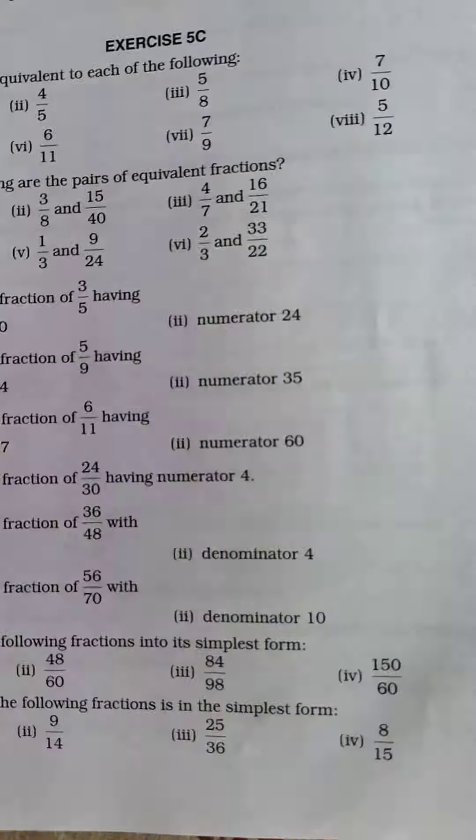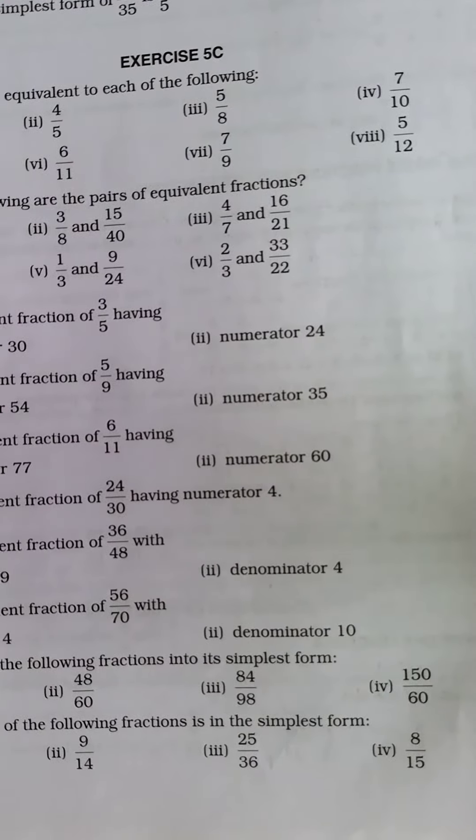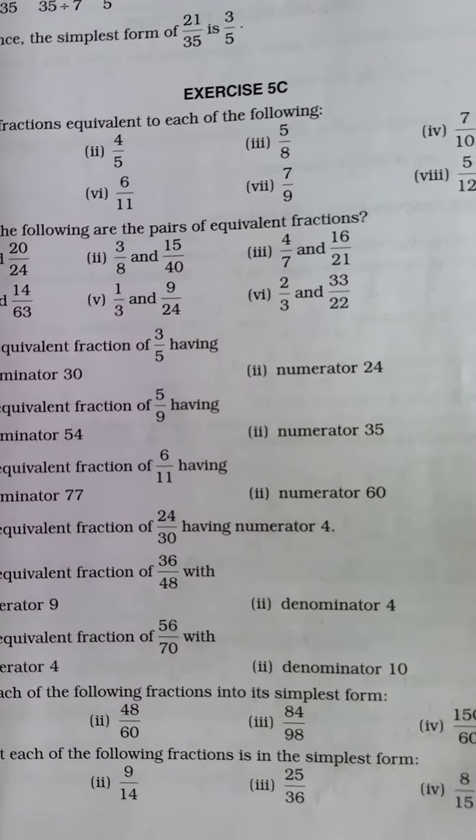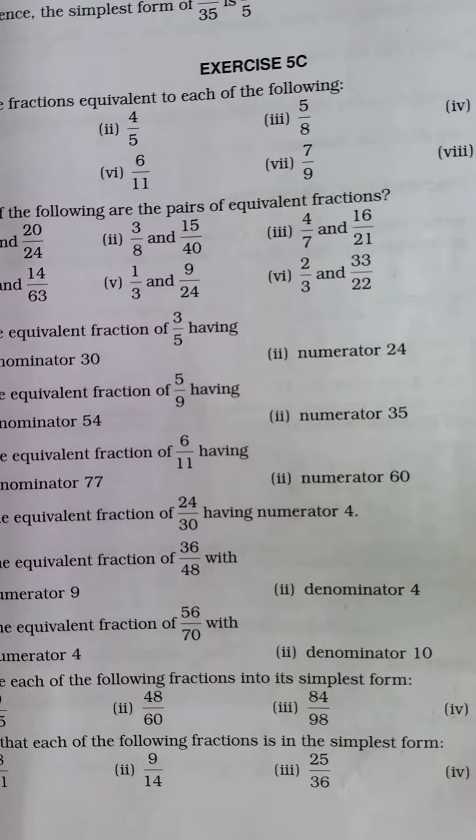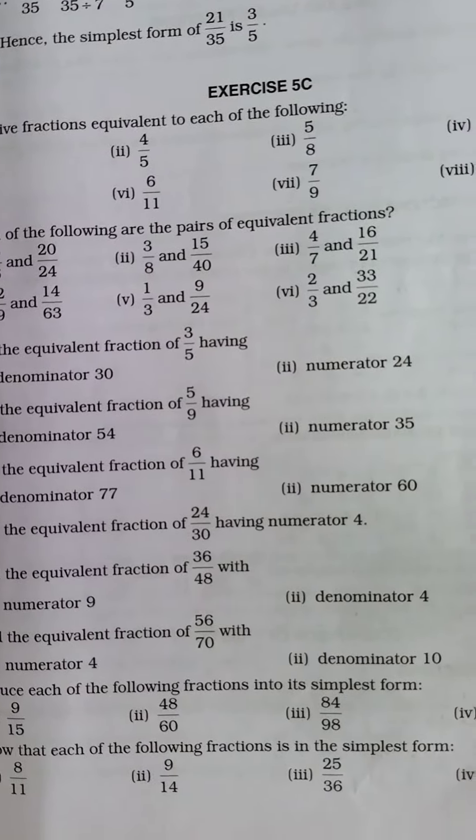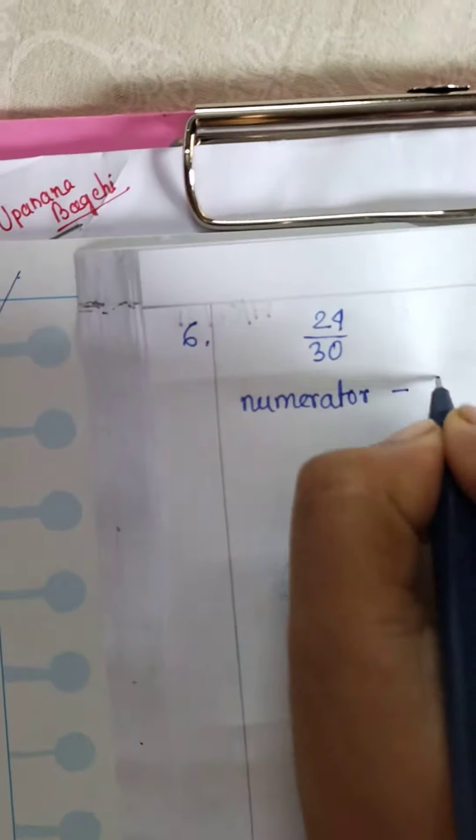So, the given fraction is 24 by 30 and we have to find out an equivalent fraction having numerator 4.